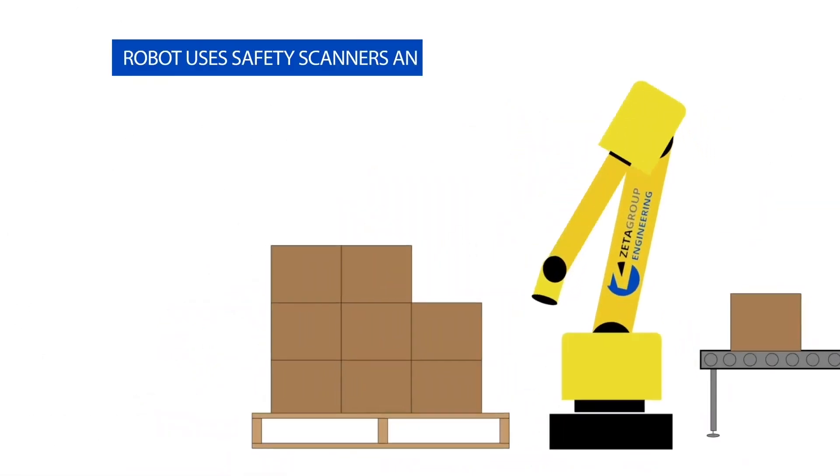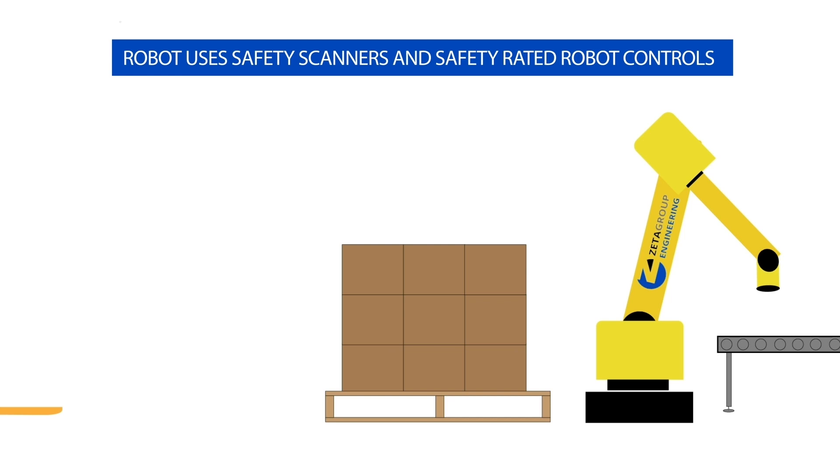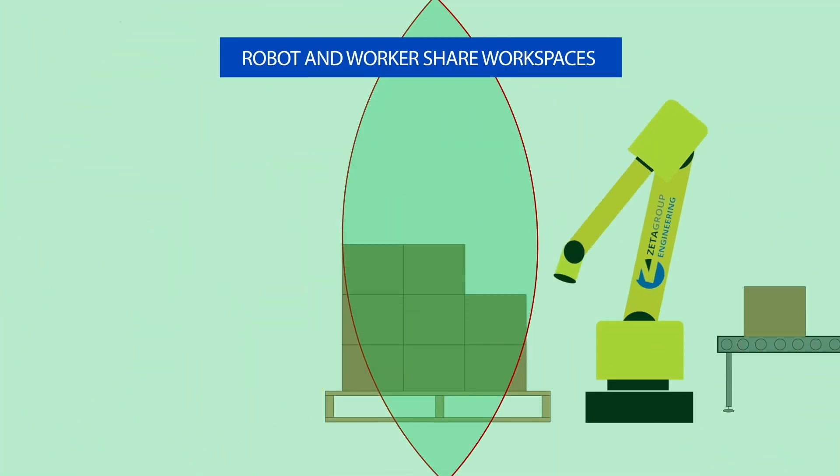Sequential collaboration. This level of collaboration utilizes safety scanners and safety rated robot controls. The worker and robot share workspaces but do so at different times.